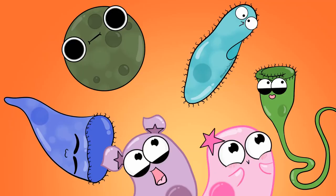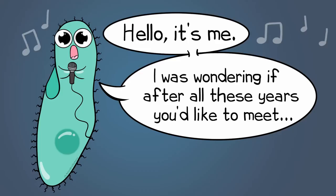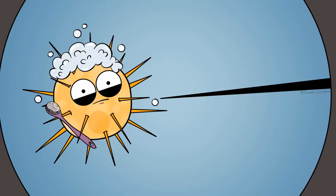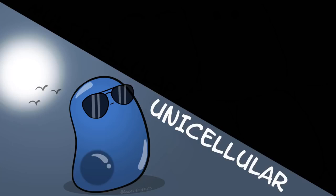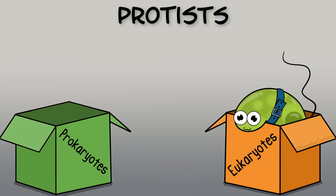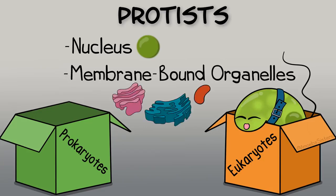Part of it is that we happen to really love amoebas and other protists. It just turns out that sometimes people forget about protists. They're not exactly easy to see — most protists are microscopic. Most are unicellular, meaning they are made up of one cell, although there are some multicellular protists. Protists are eukaryotes, which means that unlike prokaryotes, they do have a nucleus and other membrane-bound organelles.